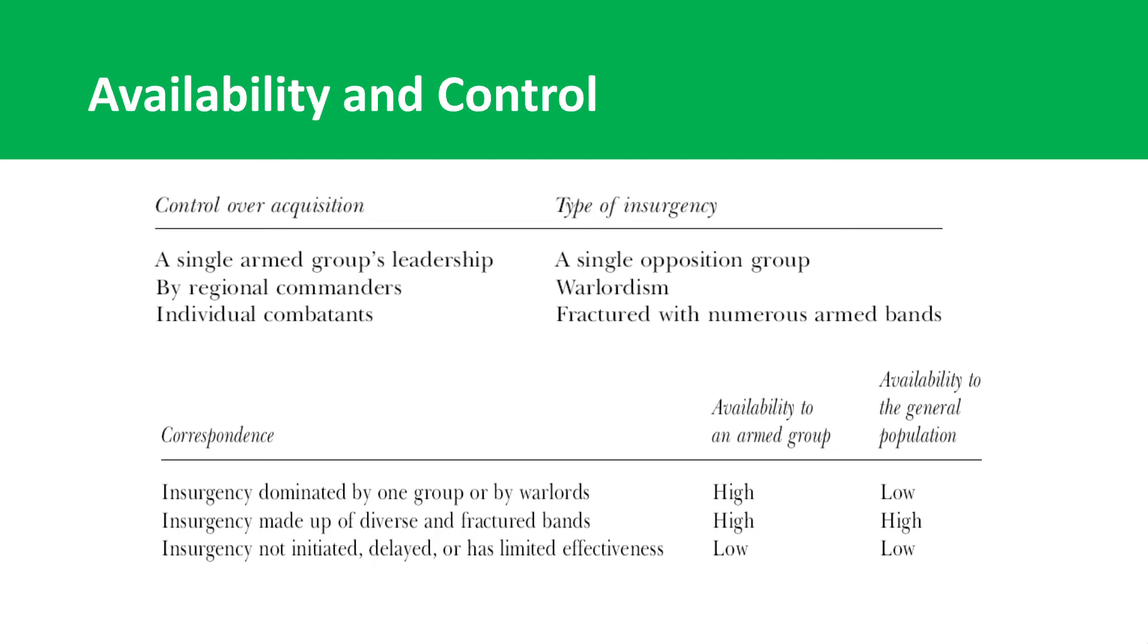Marsh's thesis is the level of fractionalization that you get within a rebel group is a function of the level of control the command leadership has over the acquisition and dispersion of guns. That in turn is a function of what's going on within society. When guns are ubiquitous in society, you're going to get these diverse fracture bands because rebels are going to be expected to source their own weapons. Whereas if you have access for the group or to the leadership, whether that's a warlord or a centralized group to weapons, but the rest of society doesn't have access, then you're going to have a leadership cadre that's going to have actual control over their organization.